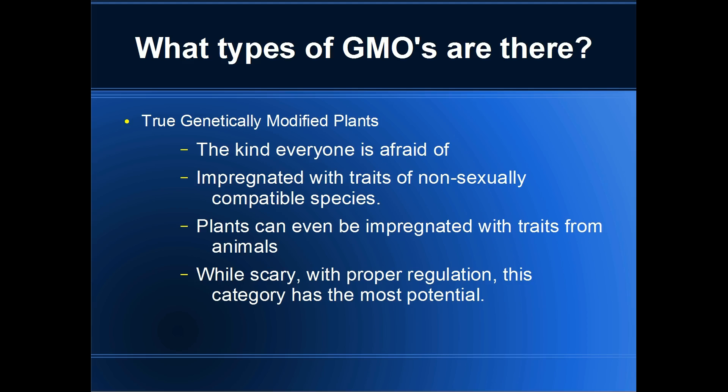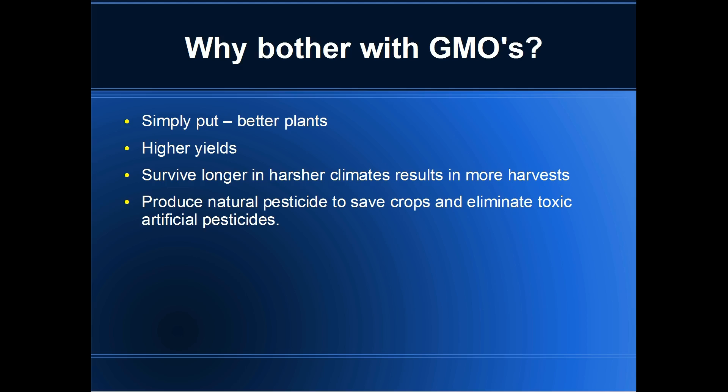While this seems scary, with proper regulation and testing it actually has the most potential to do a lot of good in the world. So why bother? Simply put, it gives us better plants. We can have higher yields, they can last longer in harsh weather, and they can produce natural pesticides — which sounds bad, but considering the toxic pesticides we already use, this would eliminate a very damaging substance from our environments and our bodies.